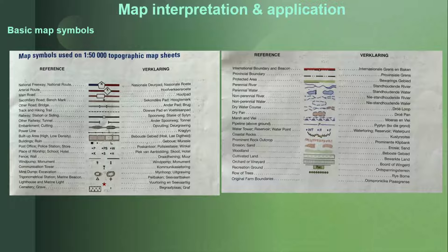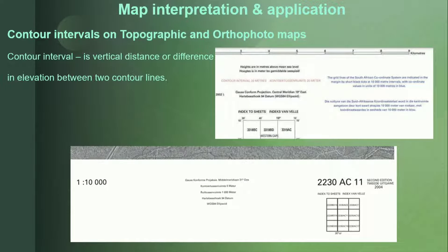The first concept you need to understand is contour intervals. A contour interval is the vertical distance or difference in elevation between two contour lines. There is a difference between the 1:50,000 topographic map and your 1:10,000 orthophoto maps, which are the maps you use mostly for your exams.